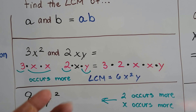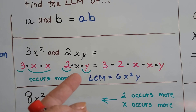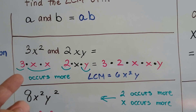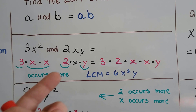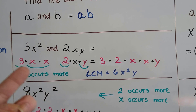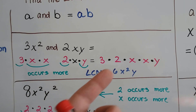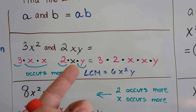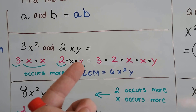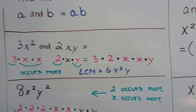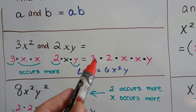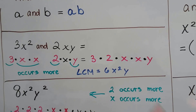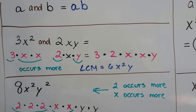We pulled out the ones that appeared the most, or the only place they showed up. The 3 and 2 only appeared once so we needed them. We had two x's so we take those instead of just one. And we only have one y, so we take that. So now we have 3 times 2 times x² times y, which gives us 6x²y. That's our least common multiple.